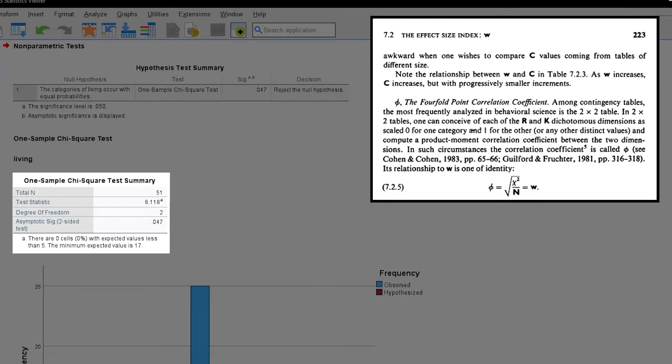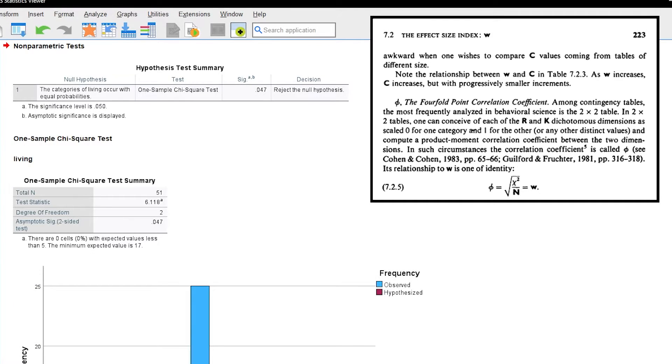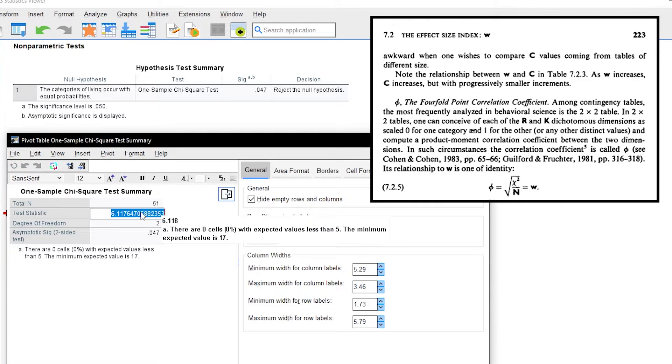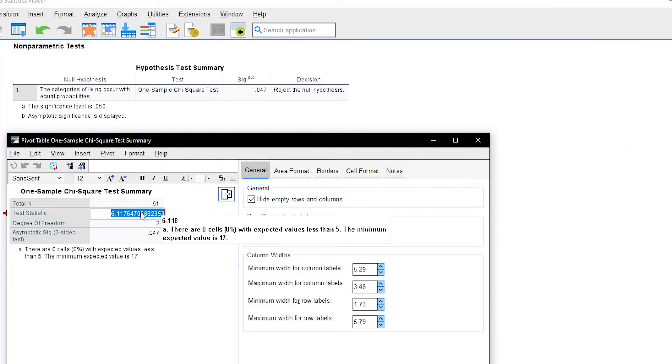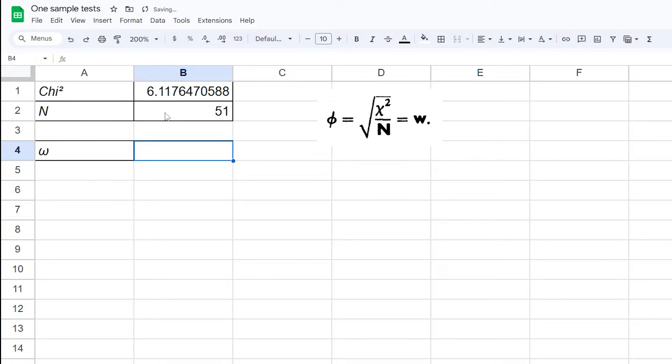I can either do the calculation in Excel, Google Sheets or use the calculator. If you want the calculation to be as exact as possible I would recommend using Excel or Google Sheets and copy the test statistic with all decimals available and do the calculation there.